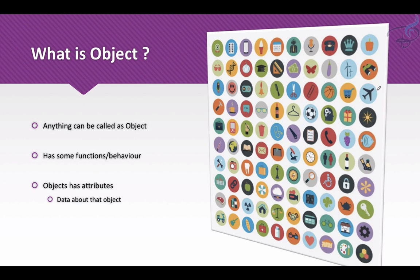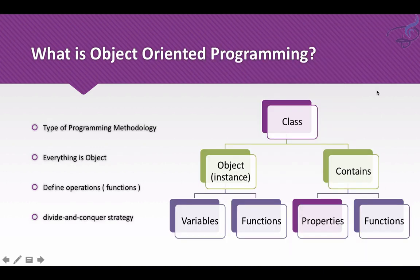These are the attributes or data which define the properties of an object, whereas its behavior is like a function — for example, an aeroplane's behavior is to fly and to take passengers from one place to another. So anything can be called an object, and all objects can have some functions and some attributes.